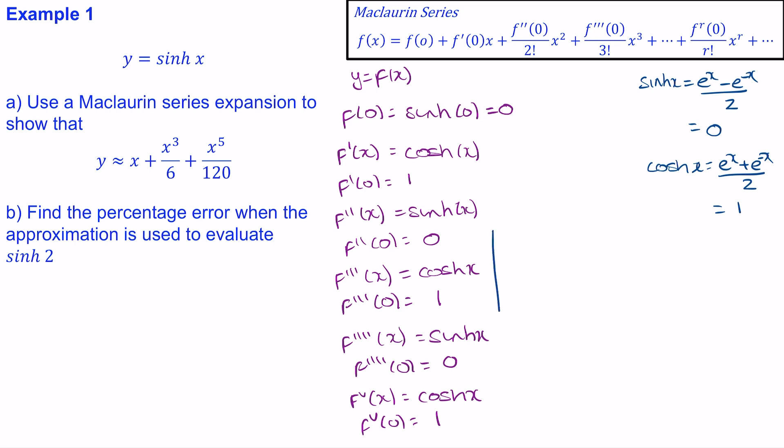So now that we have these coefficients we can substitute them into our formula. So f(x) will be approximately—we know f(0) is 0, f'(0) is 1, so this will be x. We know this term is 0. And the third derivative at 0 is 1, so this will be x^3 over 3 factorial.